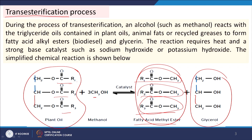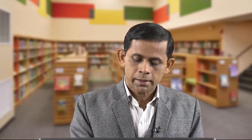This process will not take place under any condition — some specific requirements exist. We need a catalyst and methanol; the methyl alcohol provides the methyl group that combines with the fatty acid chains. During transesterification, an alcohol such as methanol reacts with the triglyceride oils contained in plant oils, animal fats, or recycled grease to form fatty acid alkyl esters — that is biodiesel — and glycerin. The reaction requires heat and a strong base catalyst such as sodium hydroxide or potassium hydroxide.